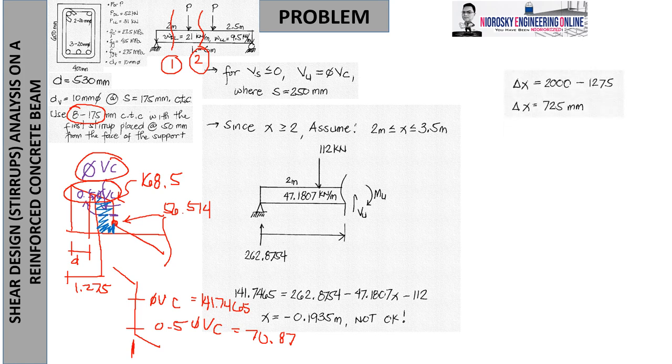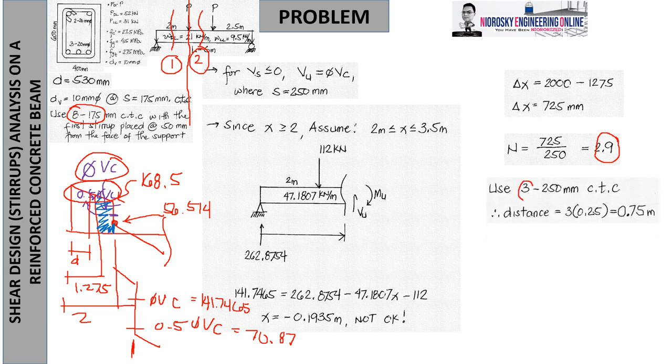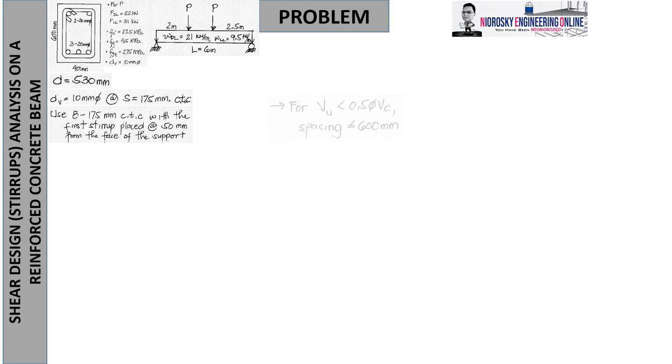You will get delta x equal to 2000 minus 1275, the area shaded in blue. Remember, this is 2 meters, right at the load force P. Then by getting the 250mm spacing, you will get 2.9 pieces. But of course, there's no 2.9, you will get 3 pieces of 250mm. The actual distance now is 0.75 meters. That's okay because it extends a bit past. So just a little overlap. It's either you extend a bit or you're right at the boundary line. Just don't fall short, that's critical for not meeting 250mm.